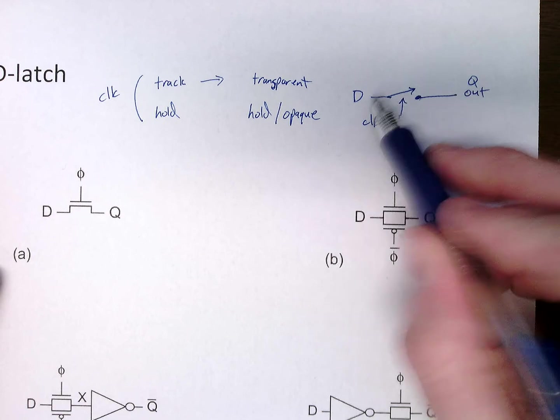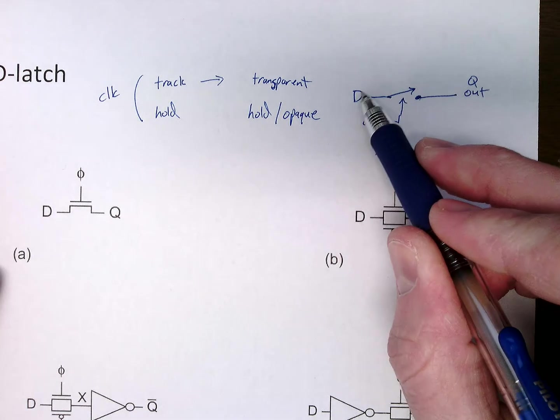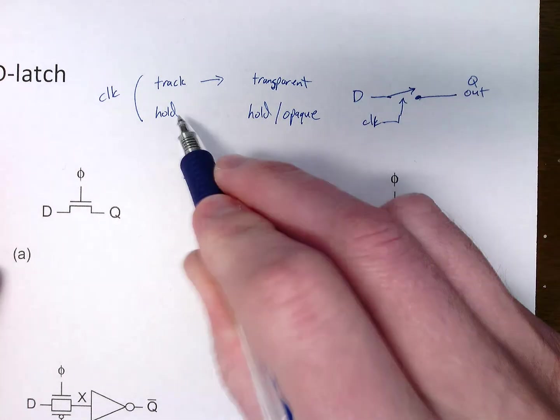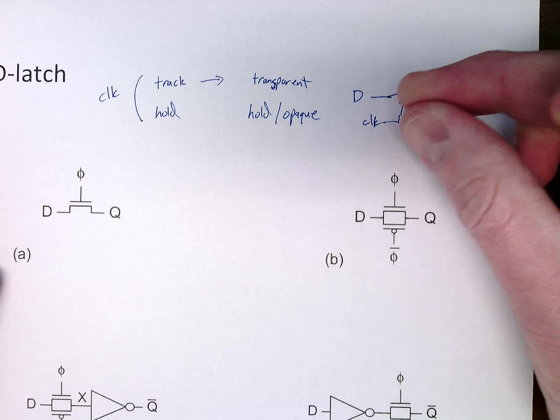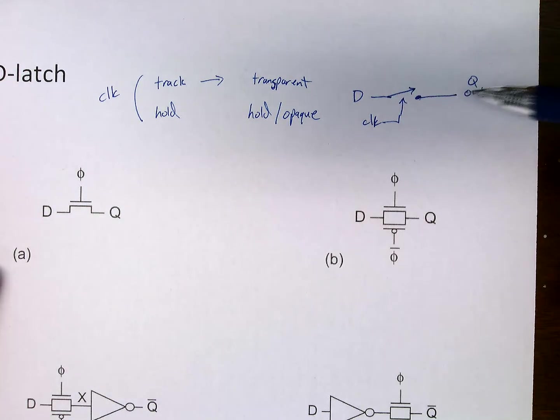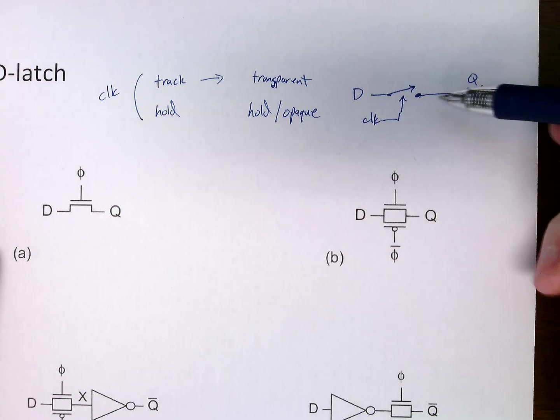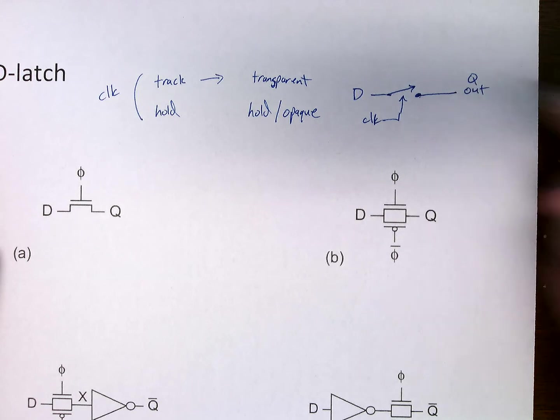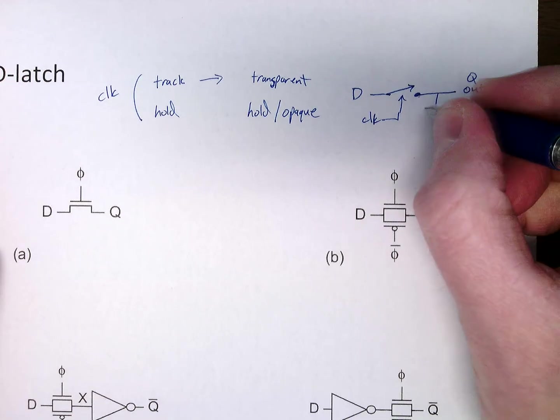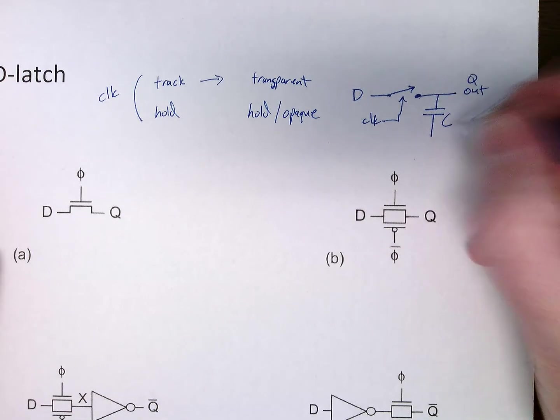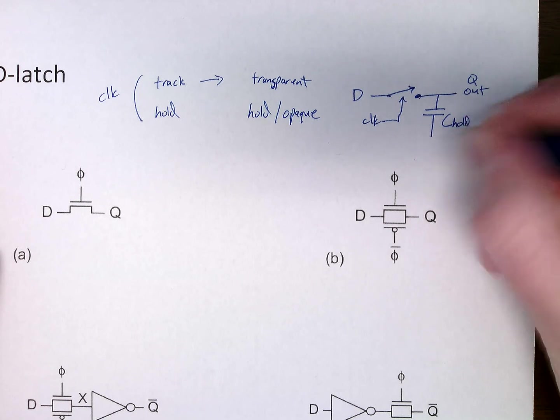Track mode, the switch is closed. D just, or Q just follows D. And then in hold mode, we open the switch, break the contacts, and Q stays whatever it is. In this sort of circuit, Q is then undefined. What we really have is we have a capacitor here, our hold capacitor.